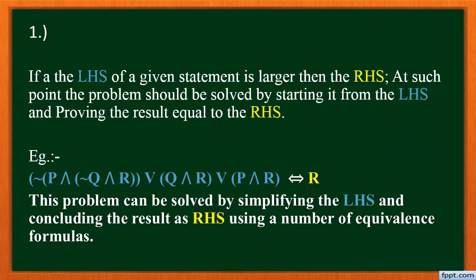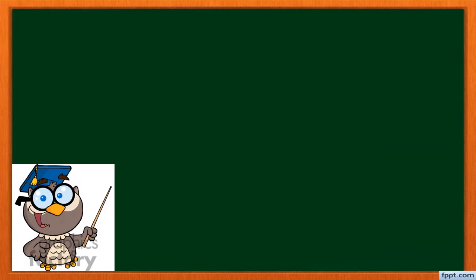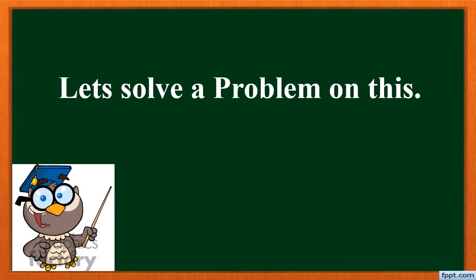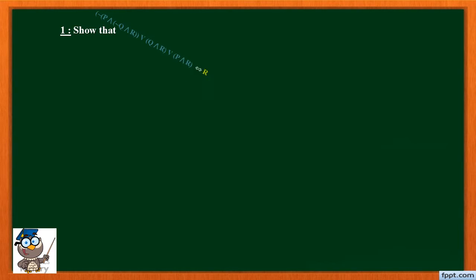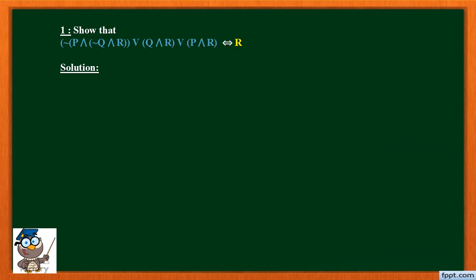It is easy to contract the left-hand side rather than expanding the right-hand side. Let's solve a problem on this step. We need to show that negation of P and negation of Q and R, or Q and R, or P and R, is equivalent to R. After observing this equivalence, you can see that it is easier to simplify the left-hand side rather than expanding the right-hand side. So we will follow this by contracting the left-hand side.